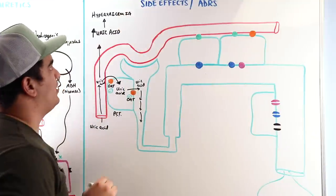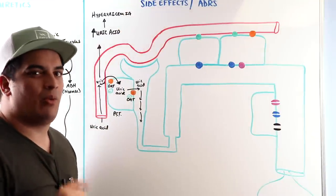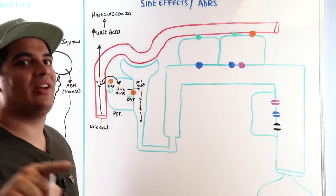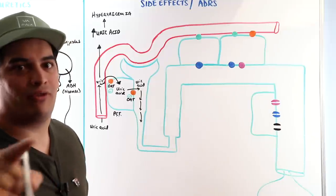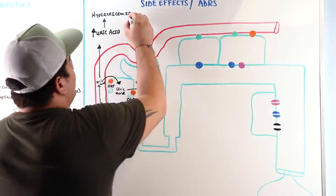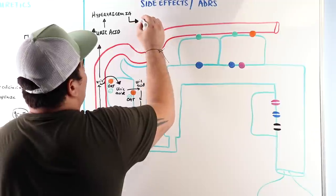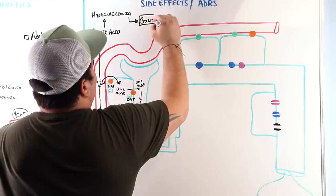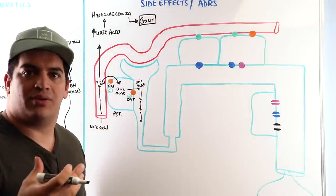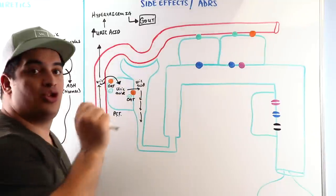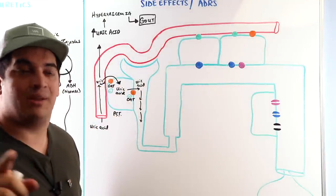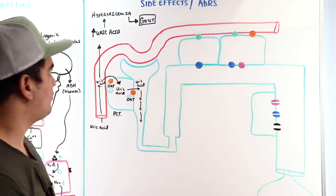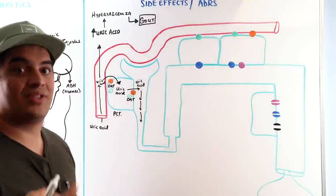Hyperuricemia can lead to monosodium urate crystals depositing into joints — particularly the first metatarsophalangeal (MTP) joint of the big toe — causing gout, with exquisite pain and tenderness. This is a significant potential side effect of thiazide diuretics.